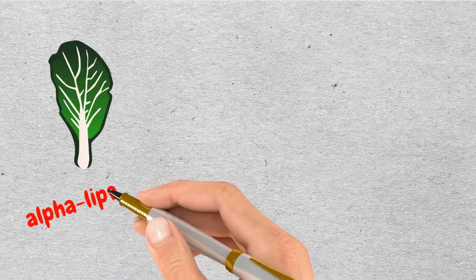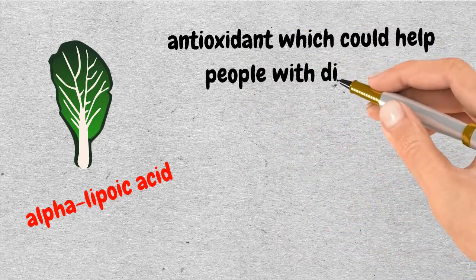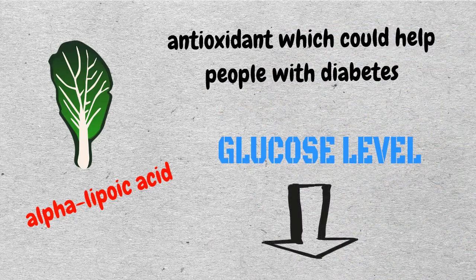Spinach also contains alpha-lipoic acid, an antioxidant which could help people with diabetes as it lowers glucose levels.